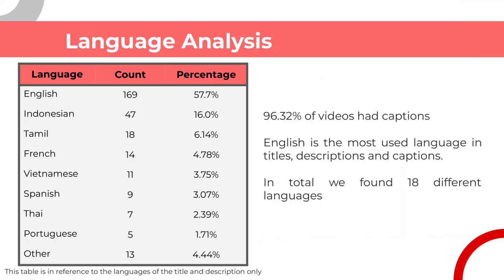Using the LangDetect Python library, we identified the languages of the title and description of the videos, as well as their captions. It's important to note that not all videos have captions, though in this case almost all of them did. In this table, you can see the detected language for the title and description of the videos. We grouped all languages that had less than five occurrences into 'other', and we found there was a wide range of languages — 18 to be exact — from which English was the most prominent by far. It was also the case for the captions, although the percentage was slightly lower, which could be due to the large use of English terms that creators use in the description of the videos in order to promote them.